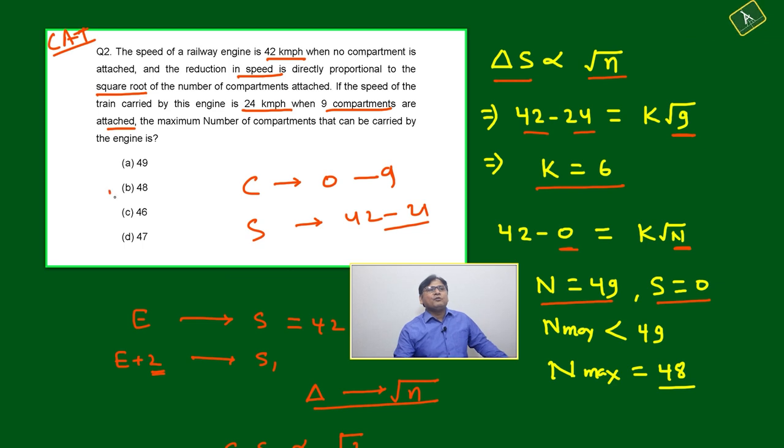The question is asking: the train should move, some speed should be there. Then maximum number of bogies - you can't put bogies in fractions. You can't put 48.7 bogies, you can't do 47.3 bogies. Either 49 or 48 or 47. Then just below 49.